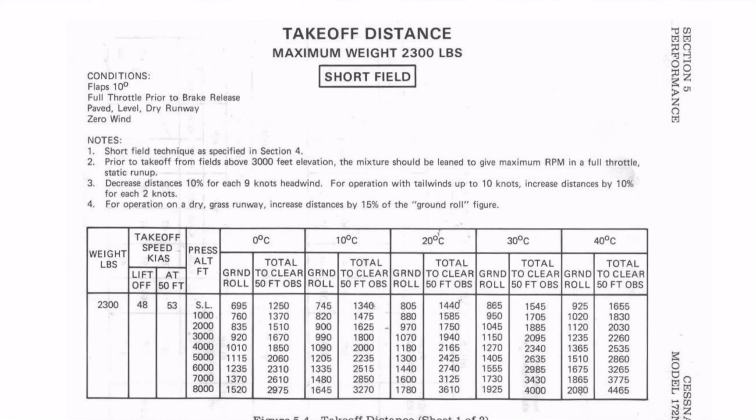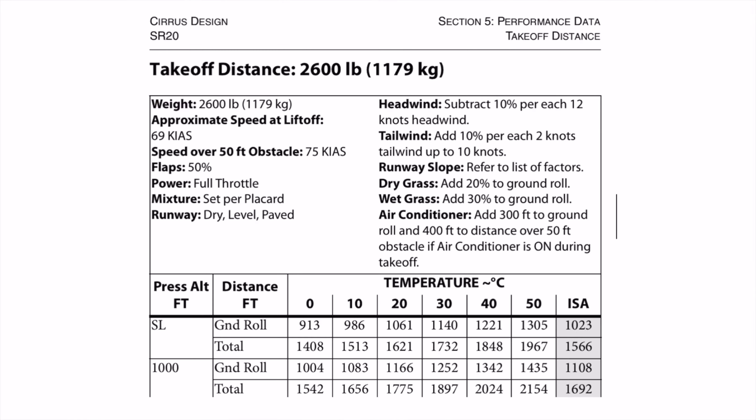For the airplanes we fly, pressure altitude is a vital component for estimating performance during the various phases of flight. This is true in Archer aircraft, Cessna aircraft, Diamond aircraft, Cirrus aircraft, and many, many others. So, let's look at two quick ways to find pressure altitude. And if you stick around to the end, I'll show you a dirty little secret about pressure altitude calculations. Let's get started.